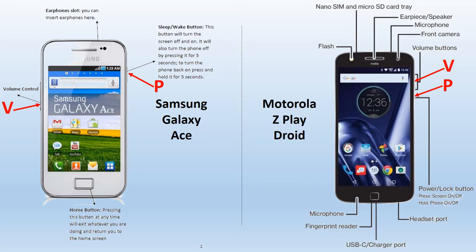The earpiece or speaker may or may not be on the front of the phone. It may be at the top or bottom. If you have stereo capabilities, you may have speakers and microphones at both ends. The front camera window faces you, but it may come through the glass or through the case, as on the Z-Play Droid. The microphone you're speaking into when using the phone is typically going to be at the bottom.